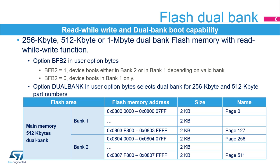The dual-bank option is used to select either a single bank or a dual-bank for the 256-kilobyte and 512-kilobyte device part numbers. For instance, when dual-bank is selected for 512-kilobyte devices, 128 pages are in bank 1 and 128 pages are in bank 2. The first page name in bank 2 is always page 256, regardless of the device's memory size, as the page name MSB refers to the bank number.